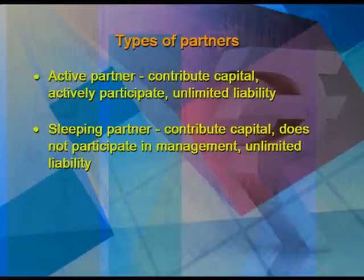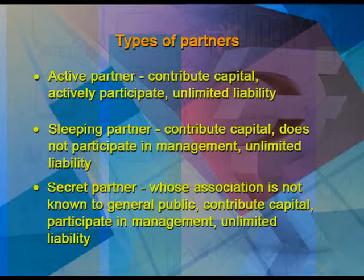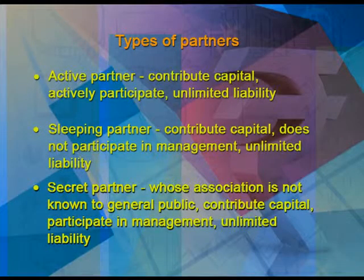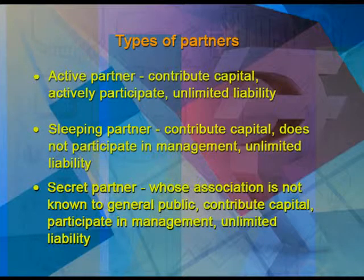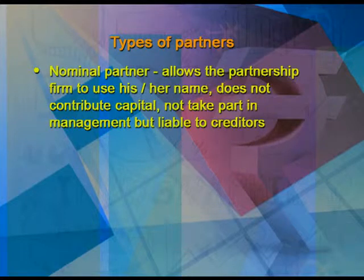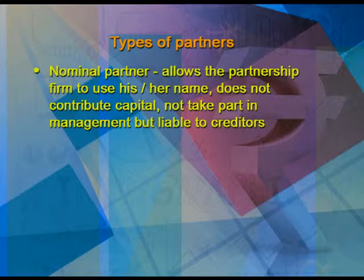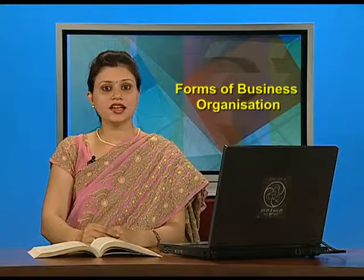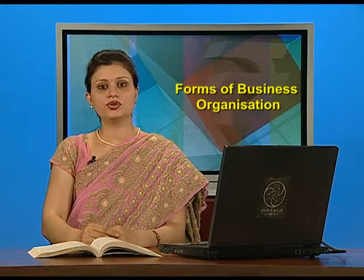The third type is a secret partner — their association is not known to the general public, but they contribute capital, participate in management, and bear unlimited liability. The fourth is a nominal partner — they allow the firm to use their name but do not contribute capital, do not take part in management, but are liable to creditors because they allow use of their name.